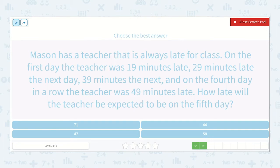Mason has a teacher that is always late for class. On the first day, the teacher was 19 minutes late. 29 minutes late the next day, and 39 minutes the next. And on the fourth day in a row, the teacher was 49 minutes late. How late will the teacher be expected to be on the fifth day? Without even writing the numbers out, I see that only the tens place is changing each time. The ones place is staying the same as 9. So 19, 29, 39, 49. Do you know what would come next? Yeah, this would go up by 1. So the 4 would go up to a 5, and the ones place would stay the same. So it would be 59, because we were just counting by tens.